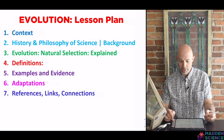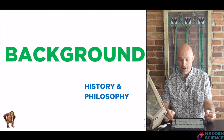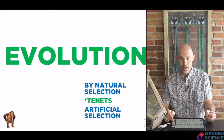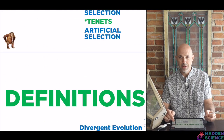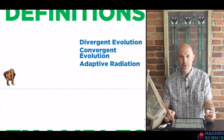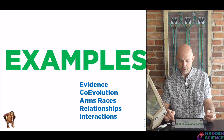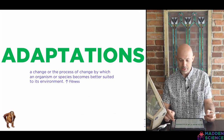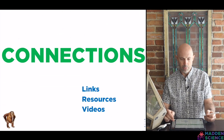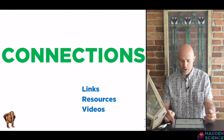Here's our plan and our flow. We'll start with context, move through background, get into the specifics of evolution and its tenets, look at some definitions and key terms, give a number of examples to try and solidify those key terms, get into adaptations, and we'll end with connections and kind of hit those as we go.